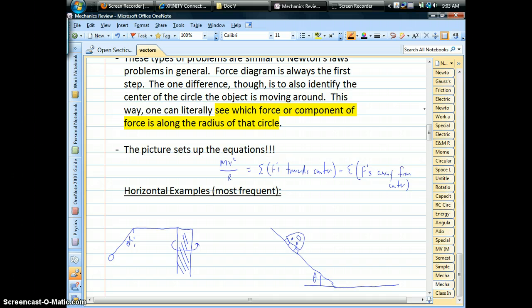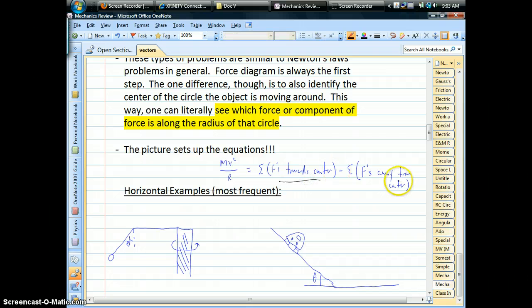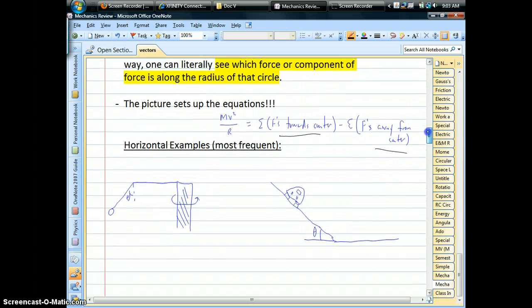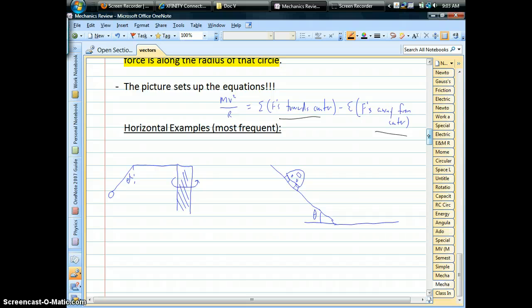But the second part of the picture is to identify the center of the circle. And by doing those two things, we can basically see, literally see, how to set up the equation for centripetal force. We'll be looking for positive forces, or anything that points towards the center of the circle, and negative forces, or centrifugal forces, because anything that points away from the center of the circle.